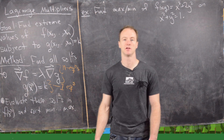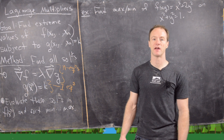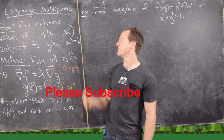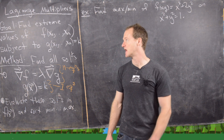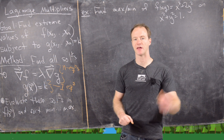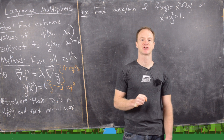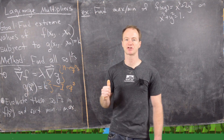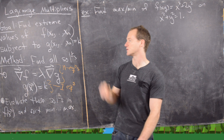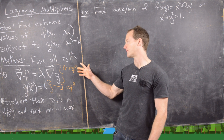In this video we're going to look at the method of Lagrange multipliers for finding extreme values of a function with more than one variable. So let's say we've got this function f of x1 to xn, with n variables, and we want to find the extreme values — the absolute max and min — subject to some constraint equation given by g of x1 to xn equals k.